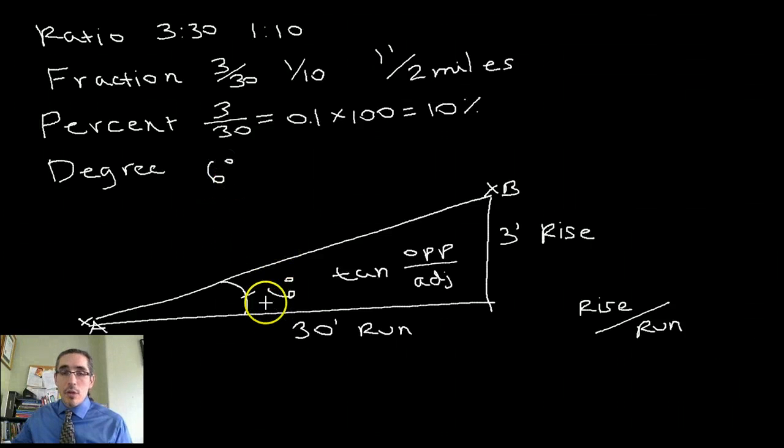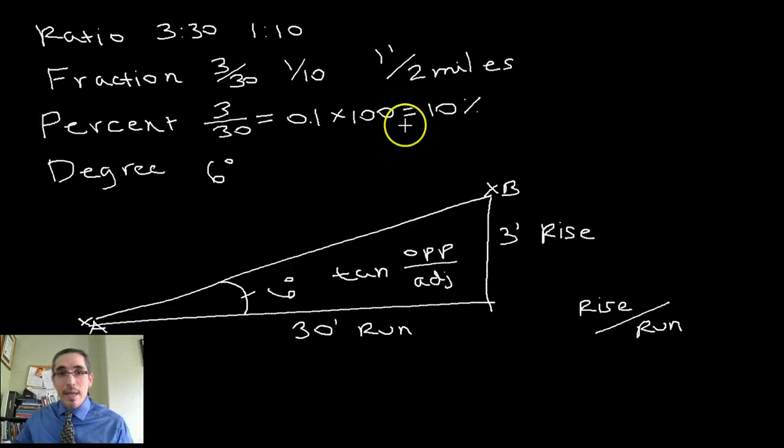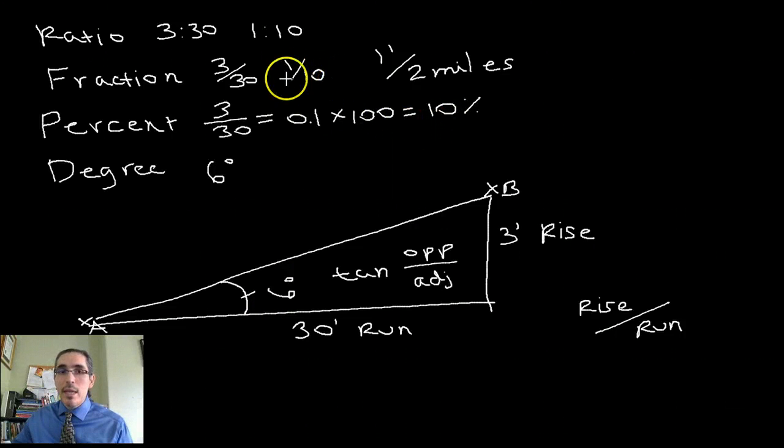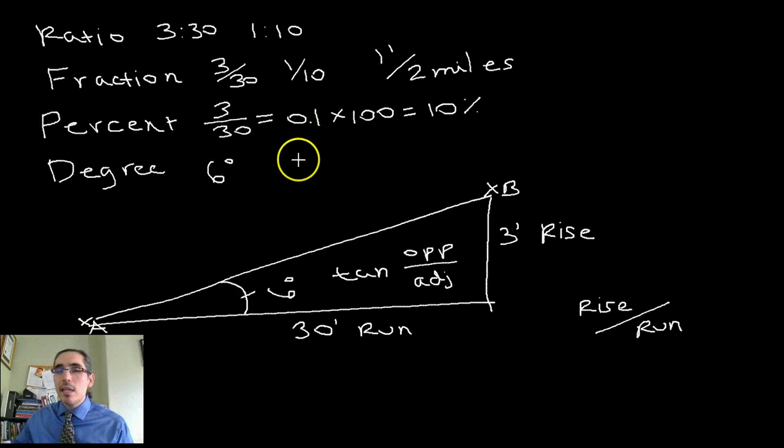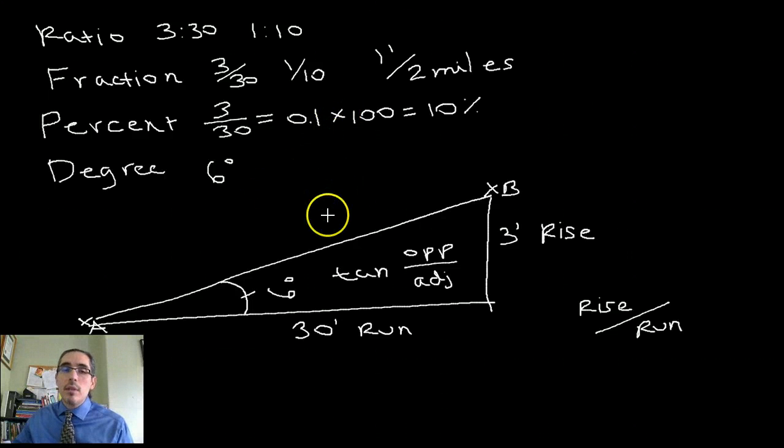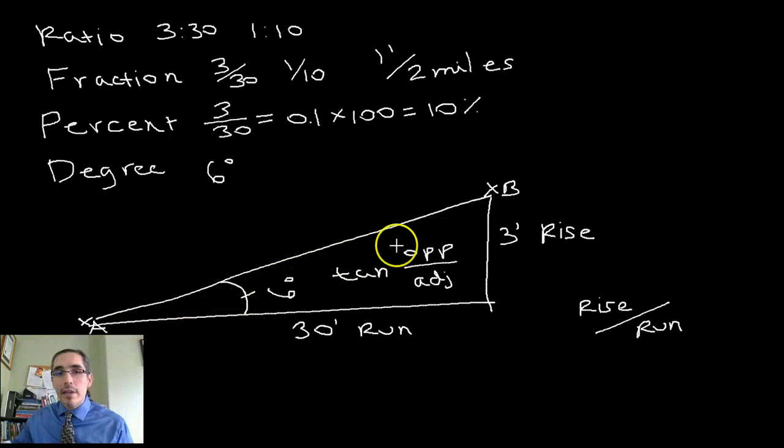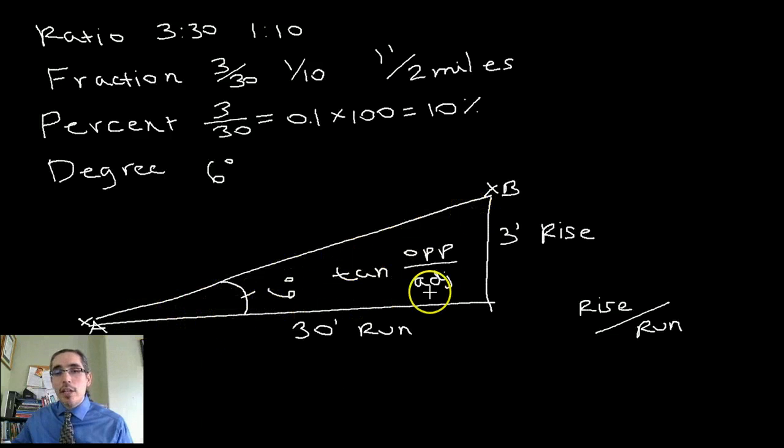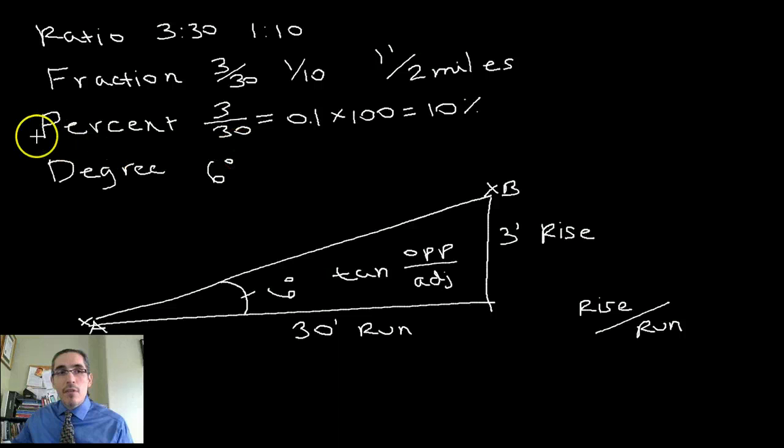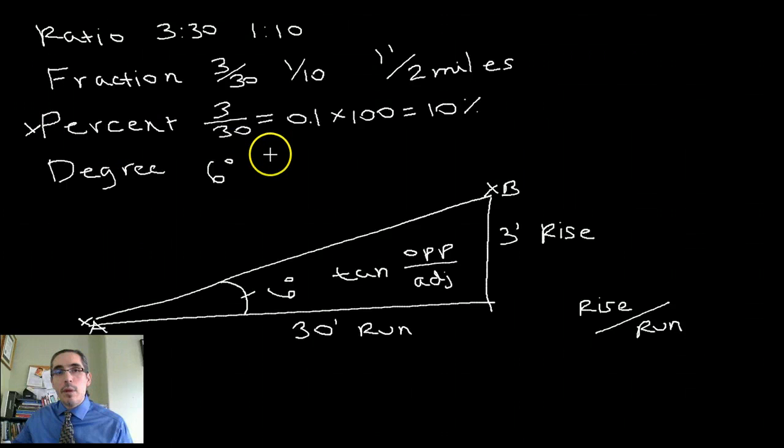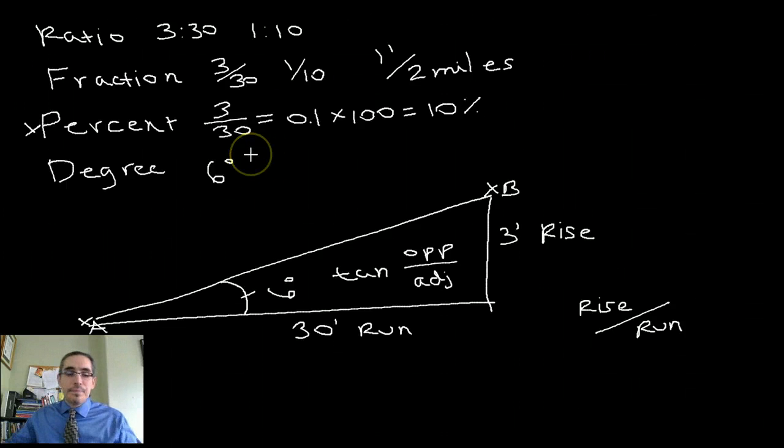So, we could say that slope is a 6 degree slope. It's also a 10 percent slope. It's also 1 foot of rise to 10 feet of run, right? So, all of these are different kinds of expressions of slope, and again, it's always about describing the relationship between how much the elevation changes for change in horizontal distance. For the most part, though, we're going to stick with percent slope as a way of describing slope. So, I'm going to stick with percent slope. Alright.